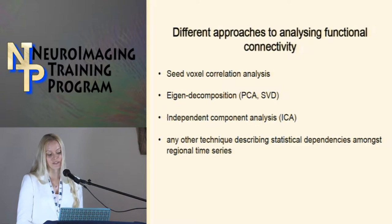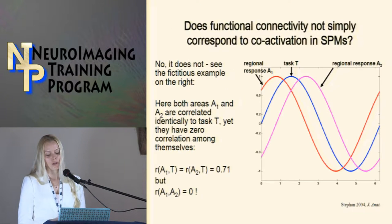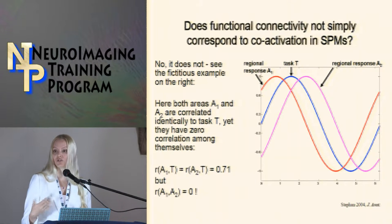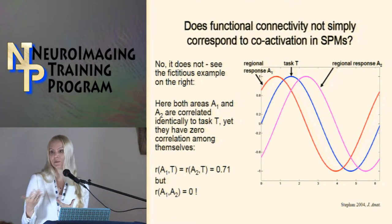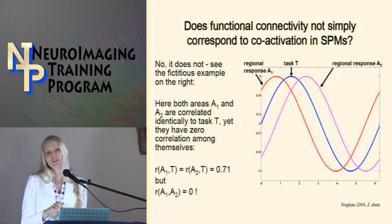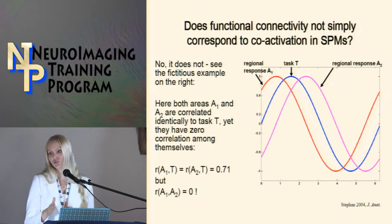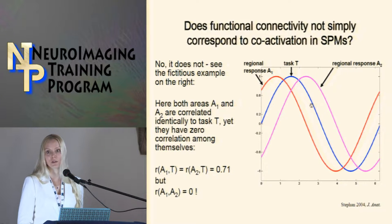More examples: anatomical connectivity involves neuronal communication via synaptic contacts, visualized by tracing techniques — long-range axons and association fibers. Functional connectivity methods include seed voxel correlation analysis, eigendecomposition, ICA, or any technique describing dependencies among regional time series. Are functional connectivities the same as co-activations seen in SPM? If you run a GLM and see active regions, does that mean there's functional connectivity between them? The answer is no, because functional connectivity is dependent largely upon the phase. Two signals that are perfectly separated will appear uncorrelated.